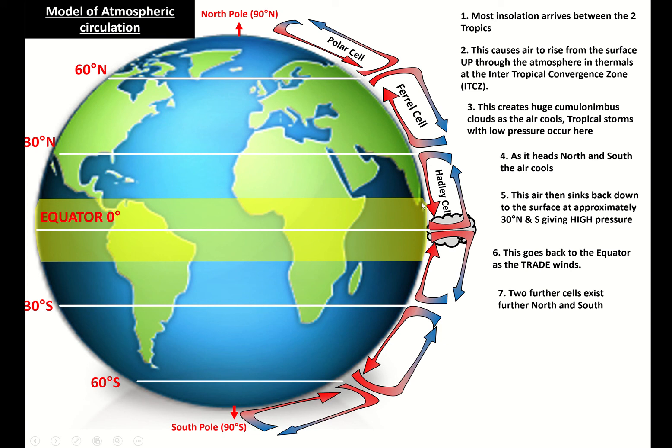That distributes heat from these equatorial regions and colder air from the northern areas and the southern pole areas back towards the equator. There's also a system of ocean currents that does the same as well. You might have heard of the North Atlantic drift or the Gulf Stream, which brings warm ocean water across from the Caribbean to the United Kingdom, and they redistribute heat.